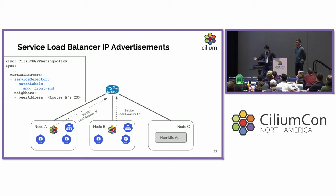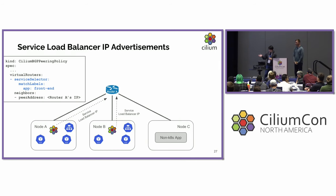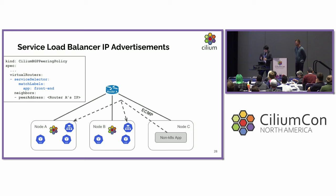With BGP you can also implement a type LoadBalancer service. In public cloud environments like GCP or AWS, they provide a load balancer implementation for you. But in on-premises environments, that is not the case — you need to prepare a load balancer yourself. With BGP control plane, you can easily implement LoadBalancer services without special equipment like load balancer appliances. You simply select services by labels, and Cilium will advertise the load balancer virtual IP for those services. The upstream router can then load balance traffic to each node using ECMP, meaning the upstream router acts as an external load balancer — fast because packet forwarding happens at hardware speed.